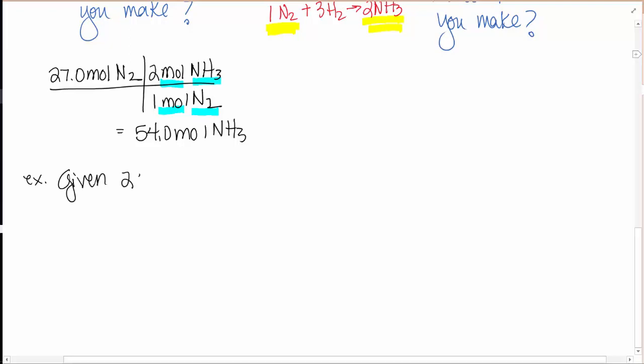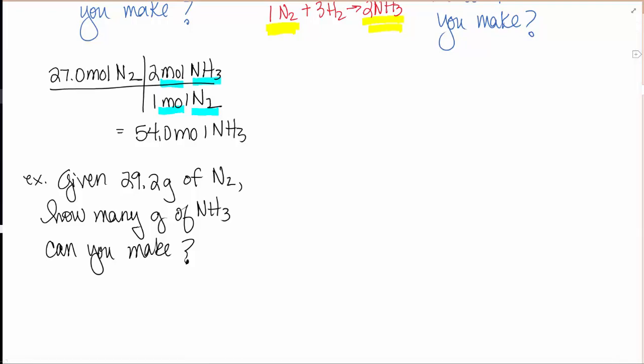In the last chapter we went from grams to moles and moles to grams. In this chapter we're able to convert from moles of one substance to moles of another using the balanced equation to create our conversions. It becomes really important you guys that you don't just write moles but you write moles of this and moles of this because they're different. Given 29.2 grams of nitrogen, how many grams of ammonia can you make?